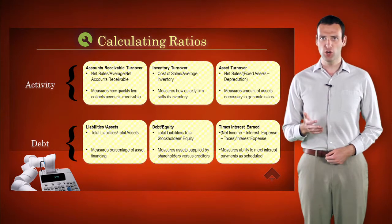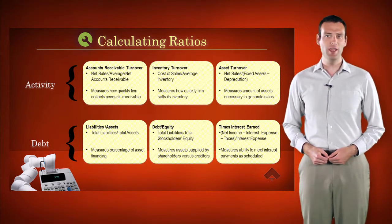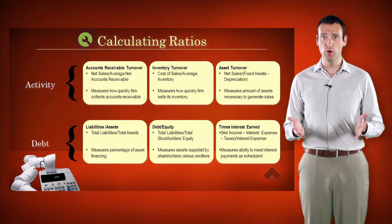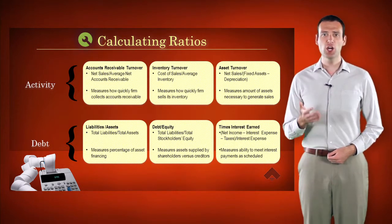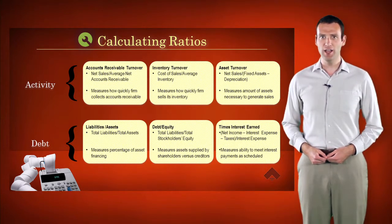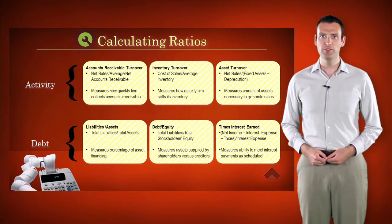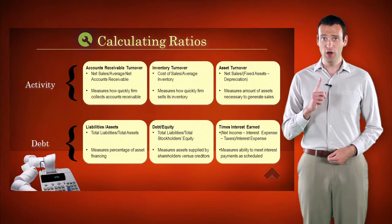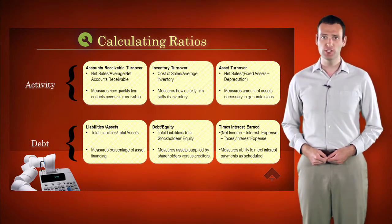Times interest earned measures a company's ability to pay interest as it comes due in order to maintain good standing with creditors. We start with net income, subtract out interest expense and taxes, and divide by the interest expense. We very much want this number to be at least one, and probably a lot more than one, in order to be sure that debt will be serviced properly.